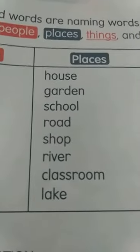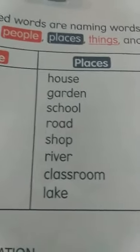Places: house, school, road, shop, river, classroom, lake — these are general public places. They can also be city, country, cities, countries, colonies. They all come under places.